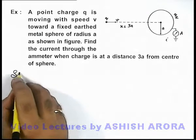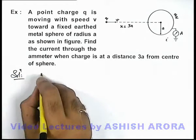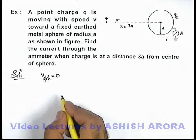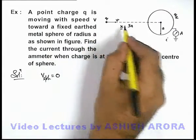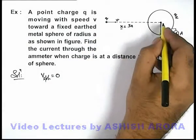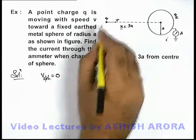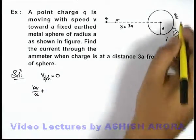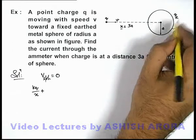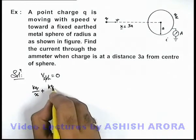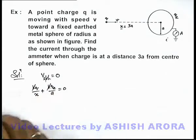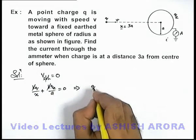So here we can write in solution: as the sphere is earthed we can write that potential of sphere is always equal to zero. So when the charge is at a distance x we can write the potential of sphere due to this charge will be kq by x, plus due to the charge which is supplied by earth it'll be kqe by a, and this should be zero.